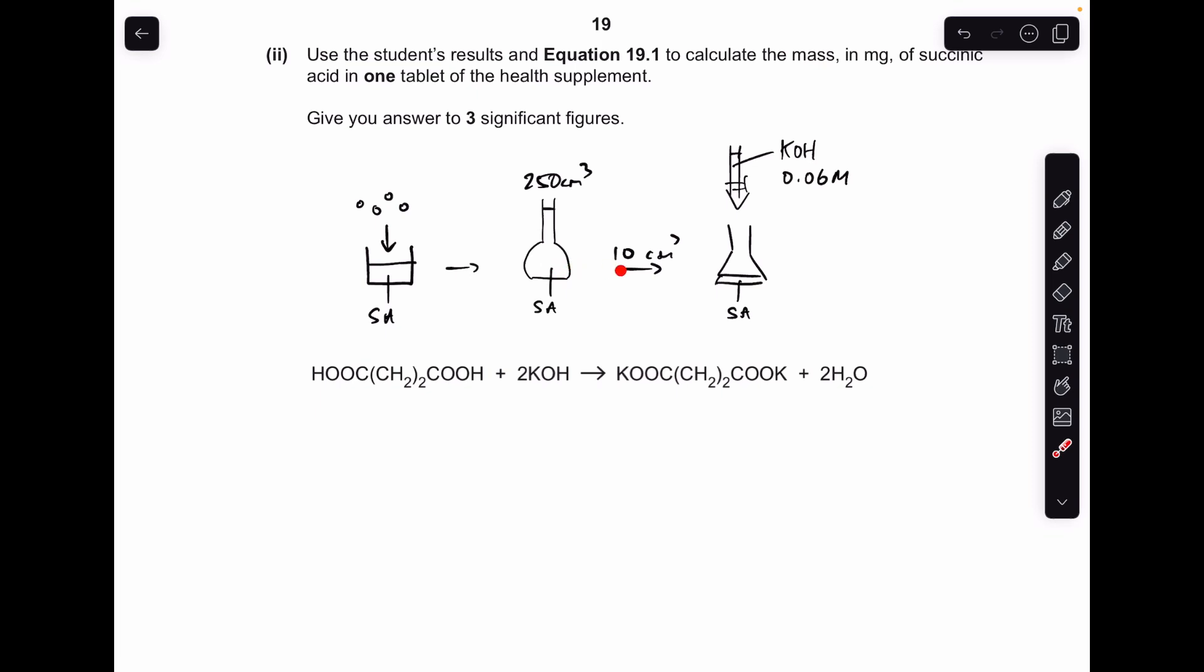They've taken 10 cm cubed out, not the usual 25, so just tens come out for the titration. And they've titrated it with that 0.06 moles per decimeter cubed KOH, and we've just worked out that the mean titre is 22.50 cm cubed.